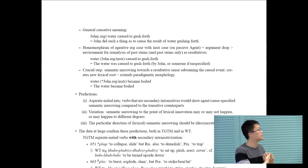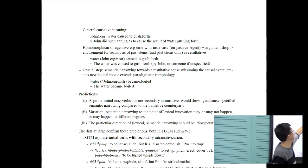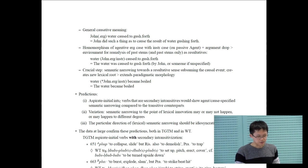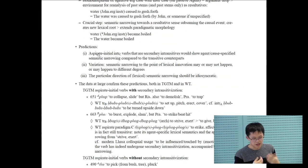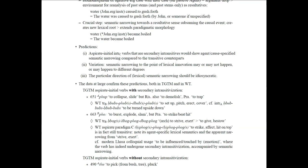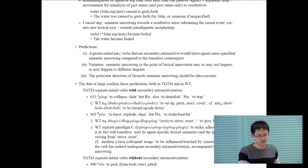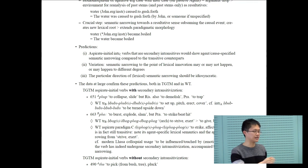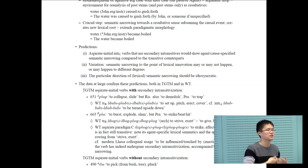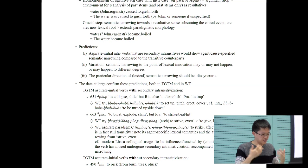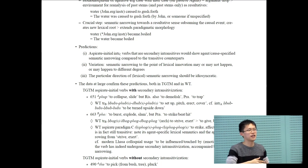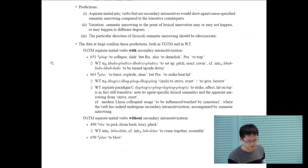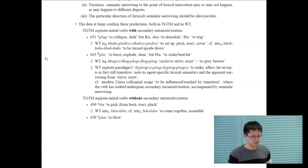The crucial step is that semantic narrowing happens on this particular causative stem towards a resultative sense that subsumes the causal event. Instead of causing to gush forth, you have a more narrow sense, namely to boil. That semantic narrowing gets lexicalized. It creates a new lexical root. The predictions: any aspirate initial intransitive C verbs show agent or cause-specified semantic narrowing. There will be variations since this is a lexical shift. All of these predictions are borne out in both TGTM and Tibetan.